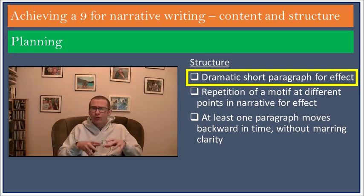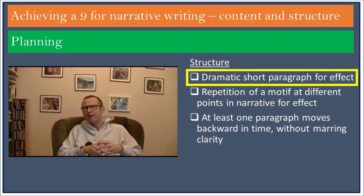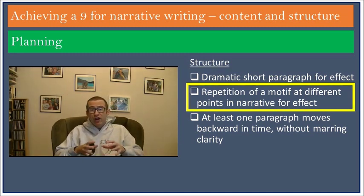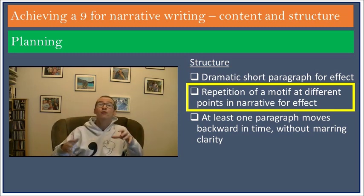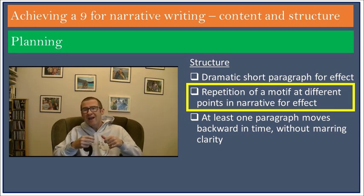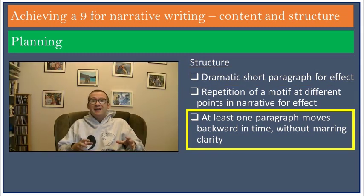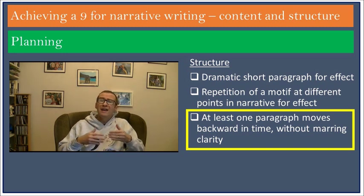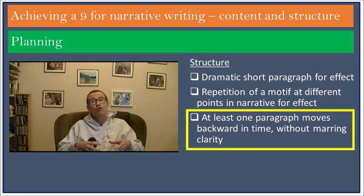The first technique is a dramatic short paragraph for effect — easy to do, and like a dramatic short sentence, it shows the examiner that you recognise the importance of variation within your writing. The second relates to repetition of a phrase or idea within different sections of the narrative, creating a visual thread that binds your narrative more strongly than mere paragraphs. Finally, the third suggests experimenting with time: one flashback, provided it is clear and doesn't confuse the reader, will inevitably produce a more sophisticated overall structure.